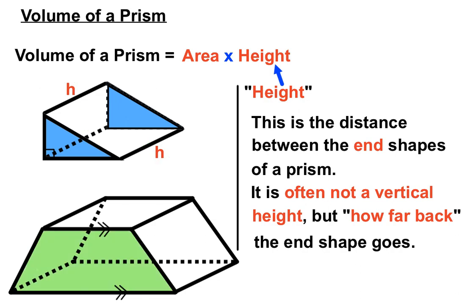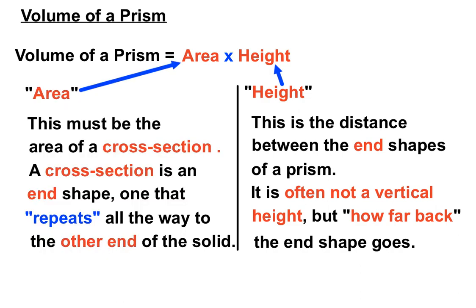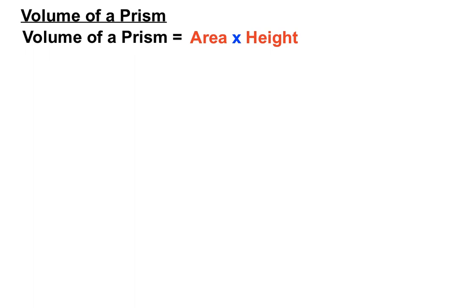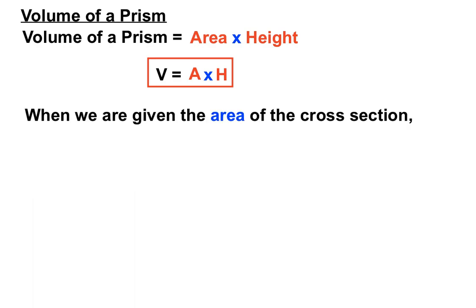We've got a trapezium at the front and a trapezium at the back. The H here represents the distance between the two green trapeziums. You could measure it along any of the parallel edges — at the front, the back, or along the back bottom edge — they all represent the distance between the end shapes, or how far back the trapezium has to go to get to the other end. We have to be careful with those definitions.